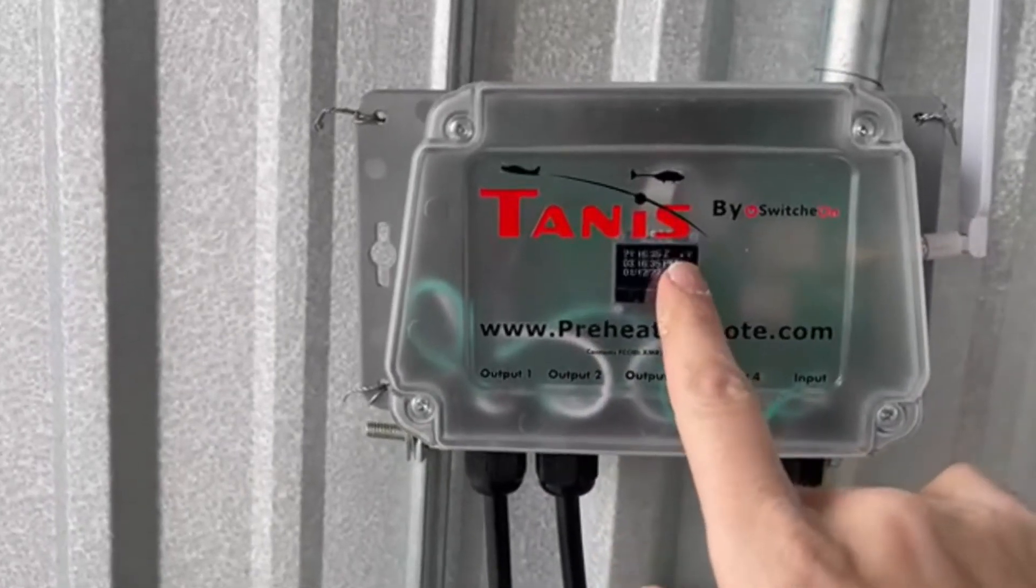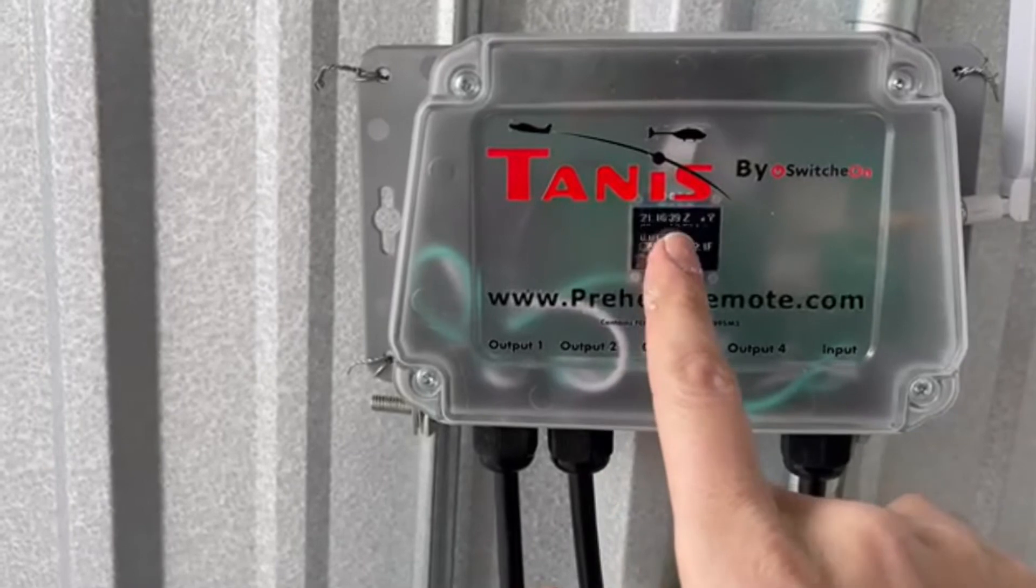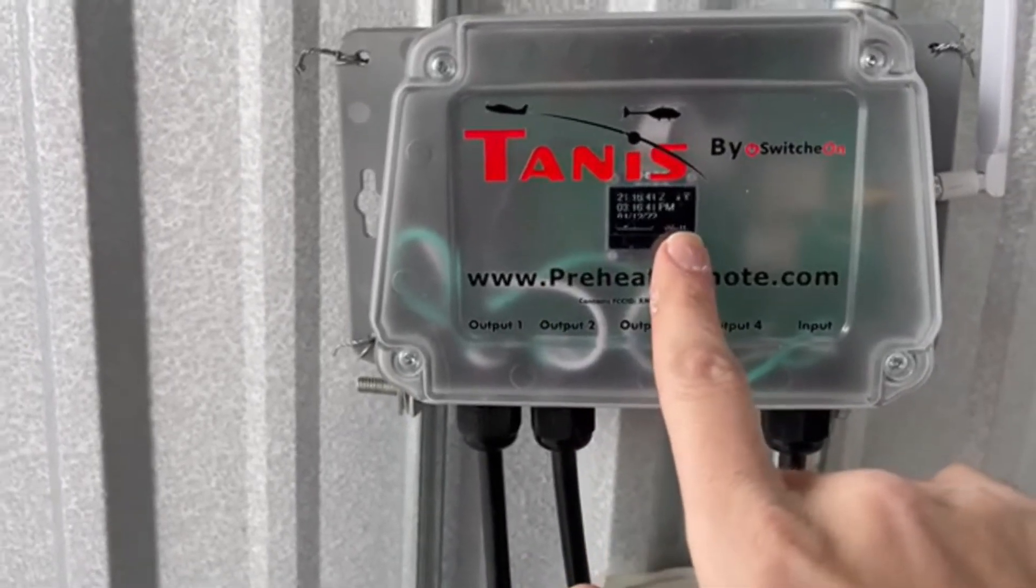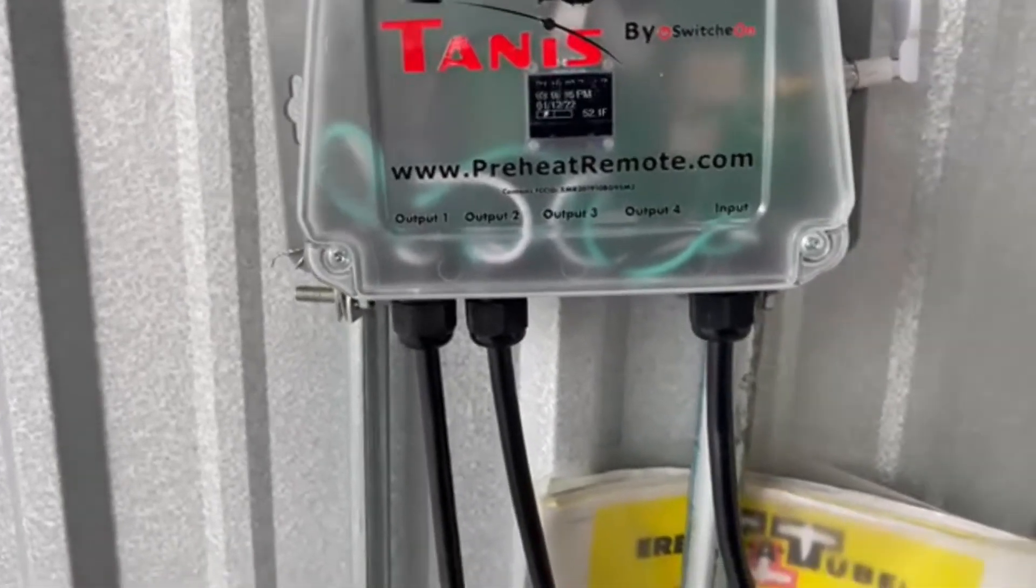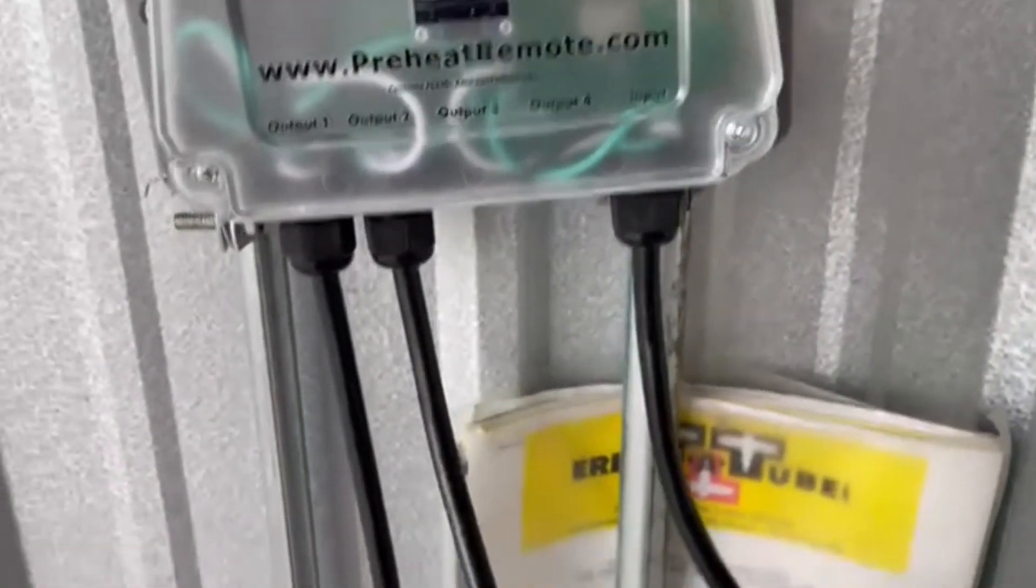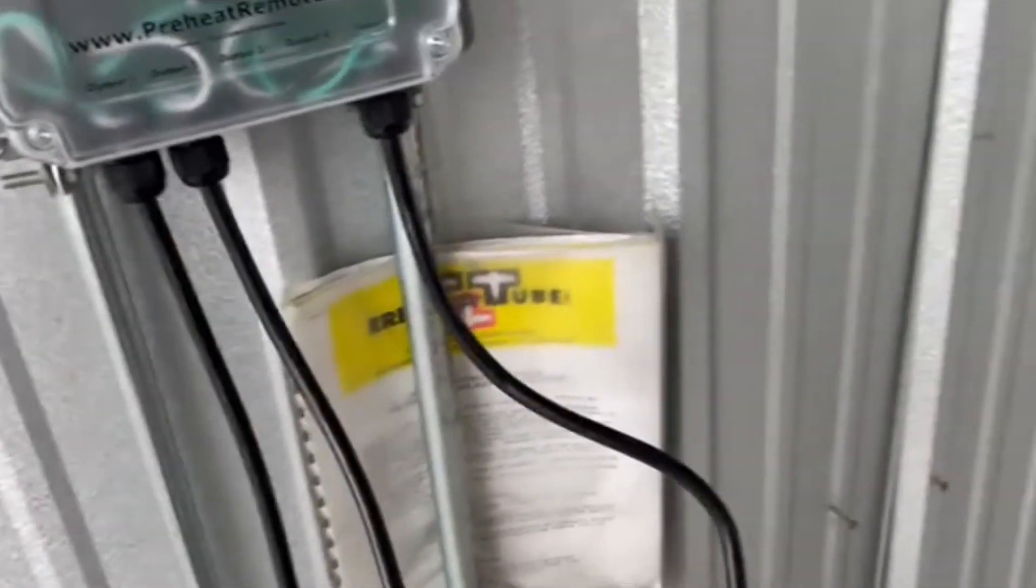You can see it gives you a signal. It tells you the current Zulu time, your local time, and then the temperature inside the hanger, which is really handy. It also shows you that on the app itself.